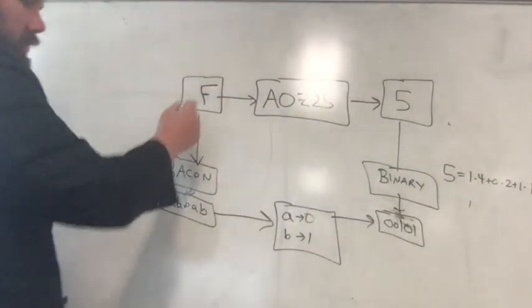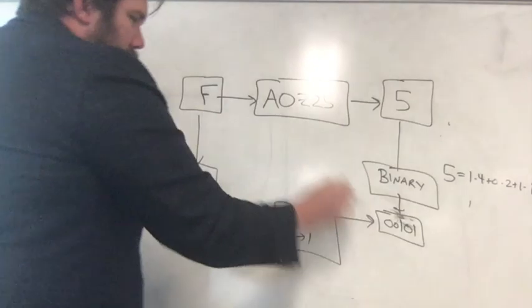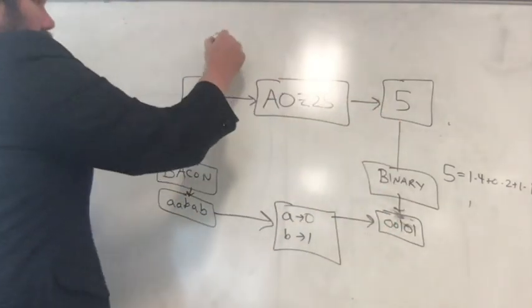This is what's called a commutative diagram, because no matter what path you follow, you end up in the same place.